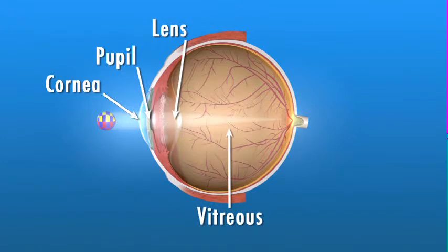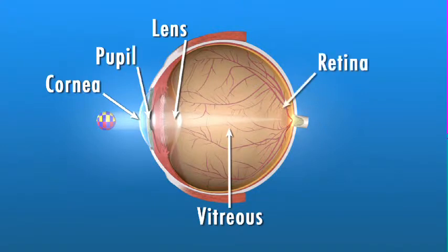These light rays pass through the vitreous, a clear gel-like substance that fills the middle of the eye. The light rays are focused on the retina, a light-sensitive tissue lining the back of the eye.